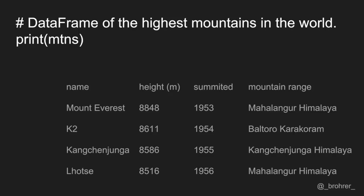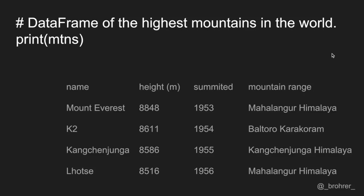If this is your first exposure to a Pandas data frame, each mountain and its associated information is a row, and each piece of information — for instance name or height — is a column. Each column has a name associated with it within Pandas, also known as a label. The labels for our columns are name, height in meters, summited, and mountain range.